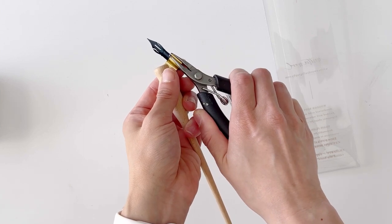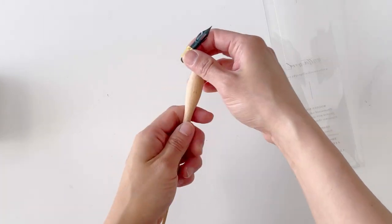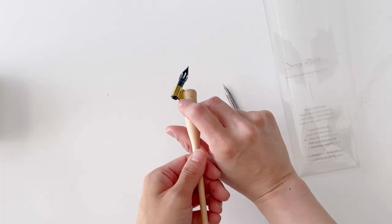If it's a little bit too loose, you can also tighten it this way in order to tighten your nib, and that way it doesn't move or shift while you're writing.